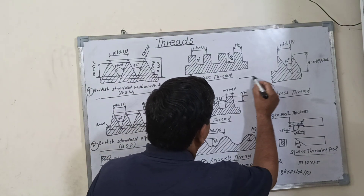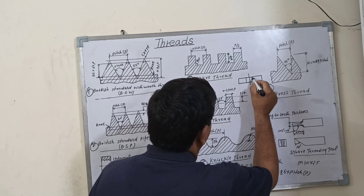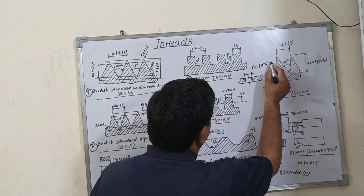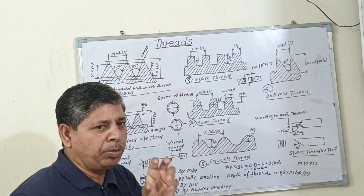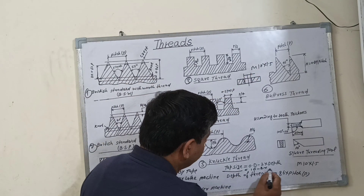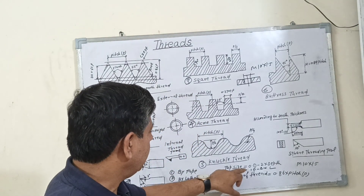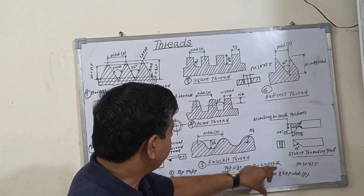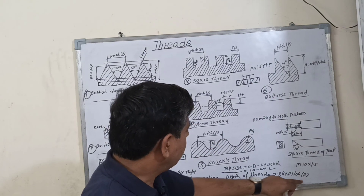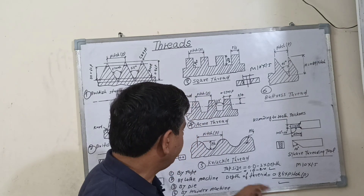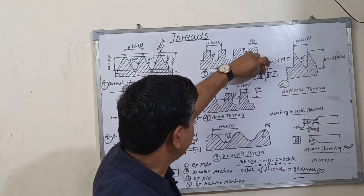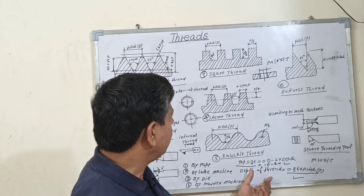If you want to cut an internal thread, you need to drill first. For example, for an M10 × 1.5 thread, what will be the required drill diameter? You will use this formula: Drill diameter = Major diameter (D) minus 2 times the depth of thread. This formula is used to calculate the drill size needed before cutting the internal thread.